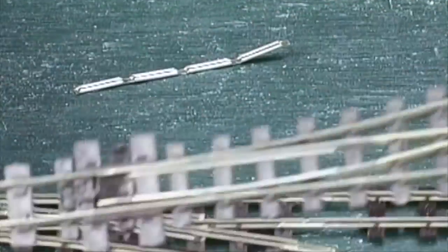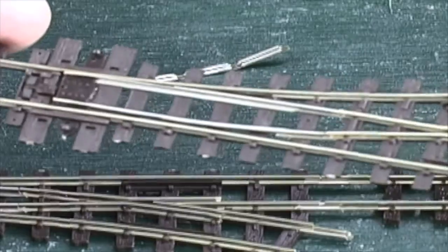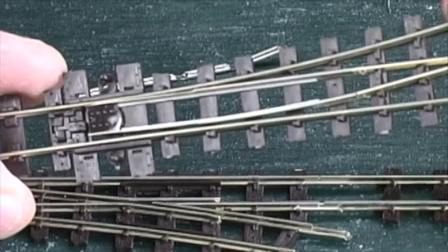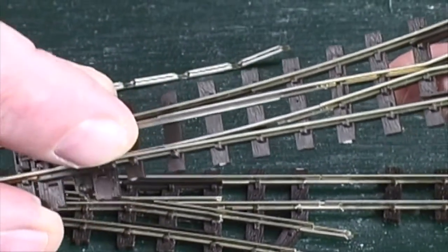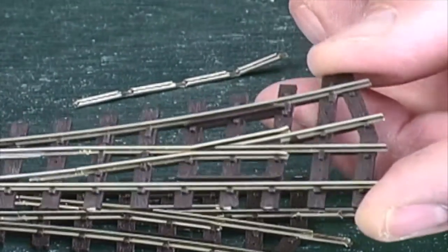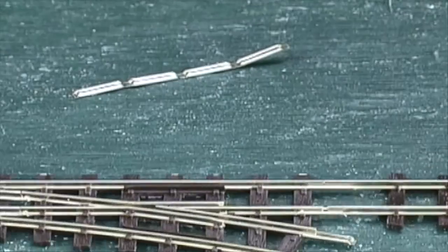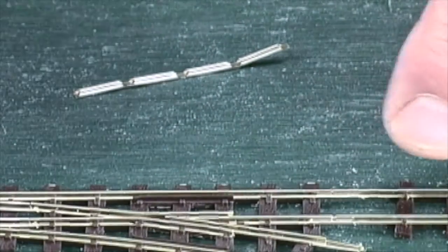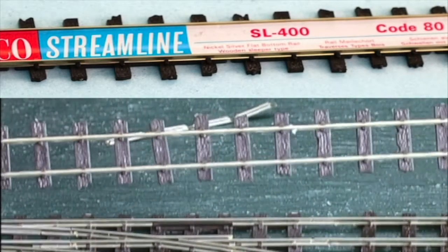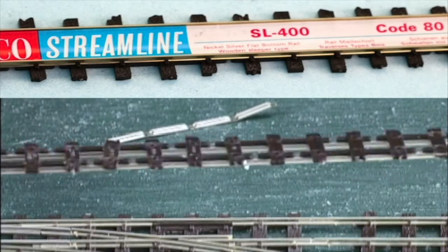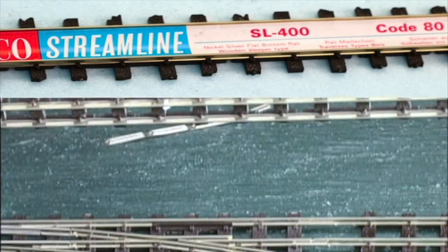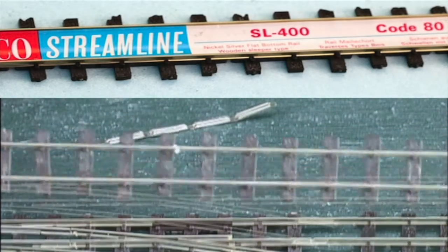These are HON30 Pico turnouts. They're very nicely made and I use these for all the HON30 projects that I build. A very nice product. We have one here and I've already put it onto a piece of Pico track. Here's the Pico track. It's a very nice product. I use it for all HON30 projects. It has the plastic ties cast right onto the rail. It's really nice and it's really flexible. You can move it around and do a lot with it.